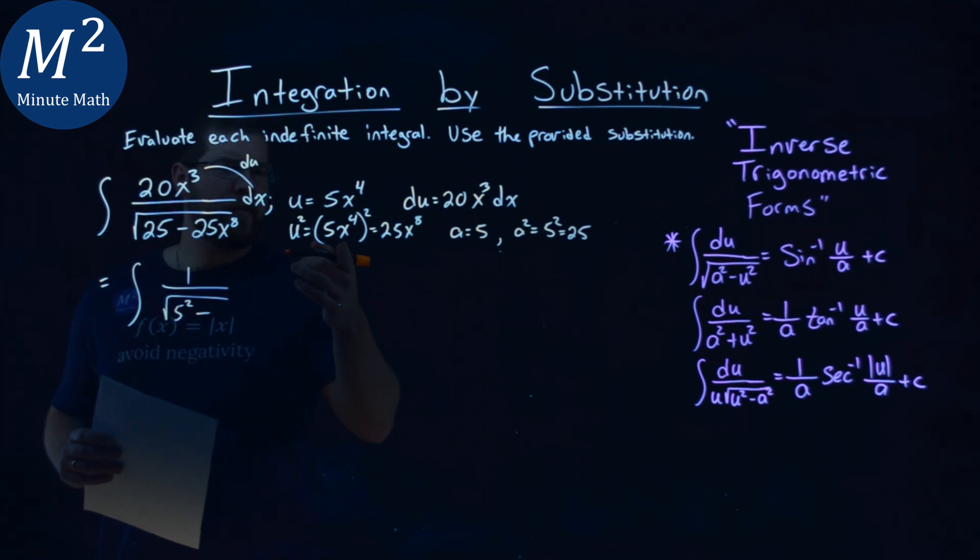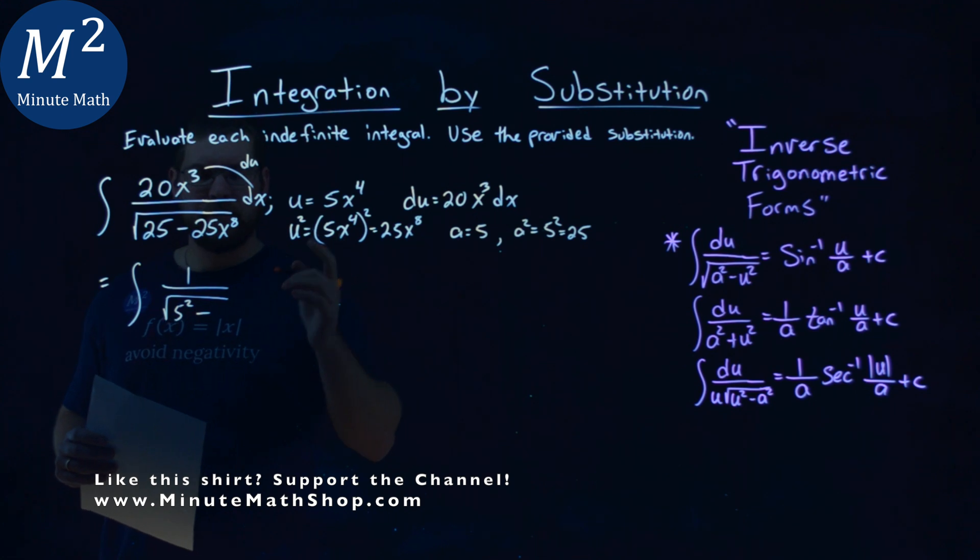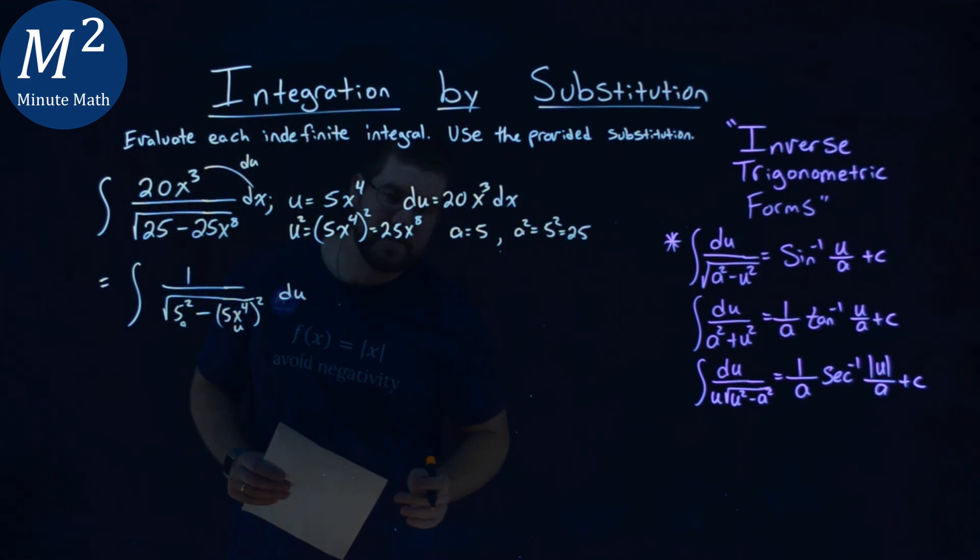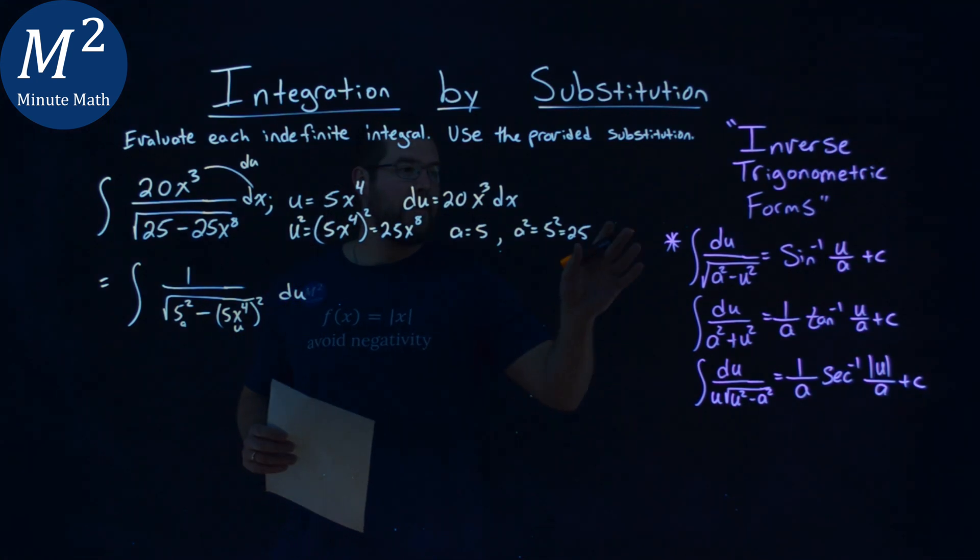And our u value being 5x⁴, right? So, we have the 5x⁴ all squared, right there, and then du. So, again, that's my u. Here's my a for my definitions here, and we can apply that for the arc sine.